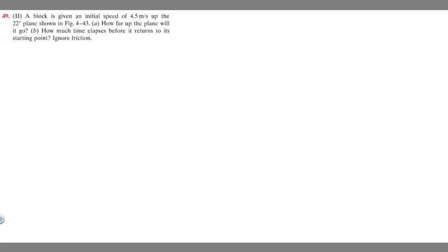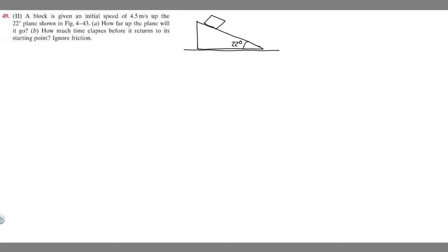So let's draw what's going on here. We have this plane — they give it to you in the figure, but imagine this is going to be our plane. We know the angle is going to be 22 degrees. And then we also know that we're going to have this block on it. So here's our block. Keep in mind, this is the ground.